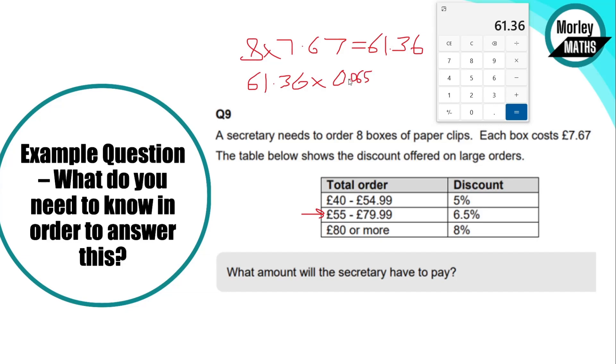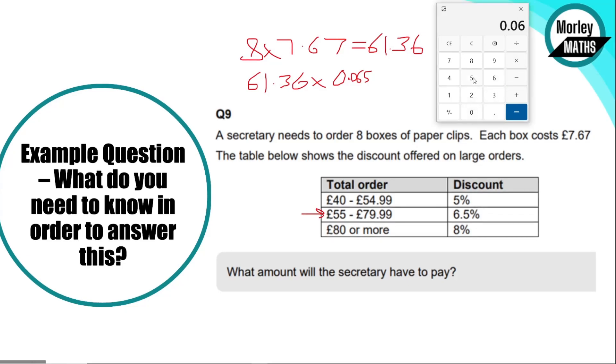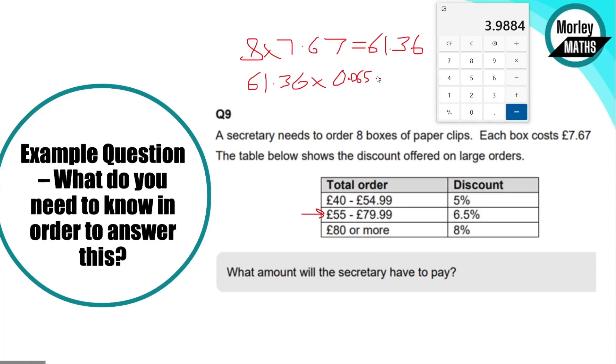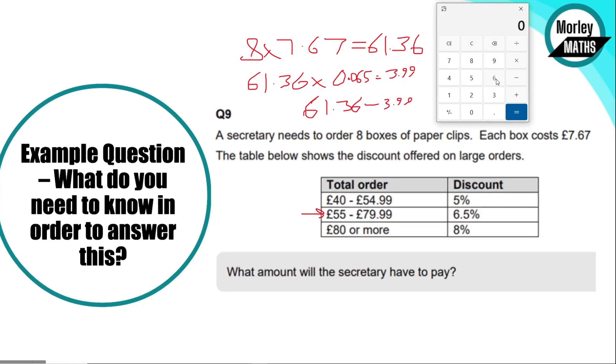Sorry, 0.065—that will give us our answer. So 0.065 gives us the amount we need to take off. Obviously we're going to have to round that up to £3.99, because we can't have 0.84 of a penny. So we'll have to round that up to £3.99. That's what we're going to take off. So £61.36 minus £3.99 equals £57.37. And that is it, that's your answer to that question.